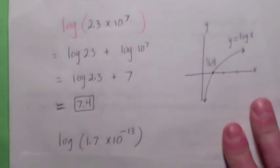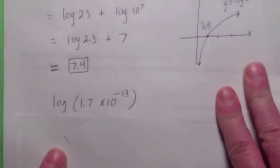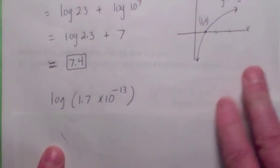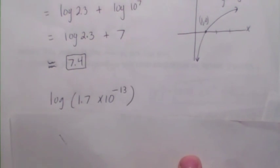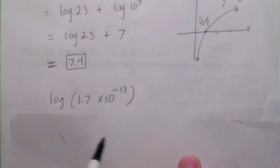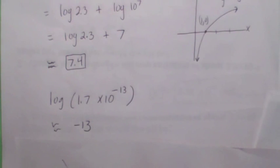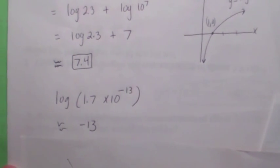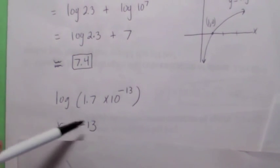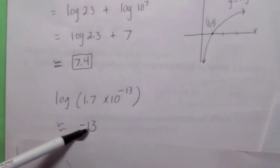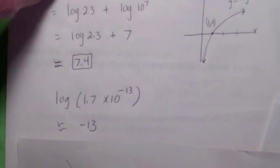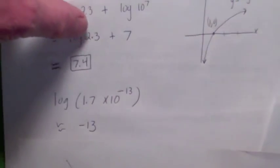Another example: if you wanted to look at the log base 10 of 1.7 times 10 to the negative 13, it's going to be approximately the exponent of 10 — so it's approximately negative 13. So if numbers vary really greatly, when you take the logarithm of them, you get a nice number that doesn't vary that much.